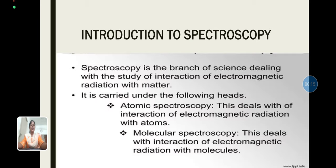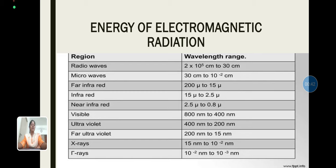Let's see the introduction to spectroscopy. Spectroscopy is a branch of science dealing with the study of interaction of electromagnetic radiation with matter. It is carried out under the following heads: atomic spectroscopy, which deals with the interaction of electromagnetic radiation with atoms, and molecular spectroscopy, which deals with the interaction of electromagnetic radiation with molecules.